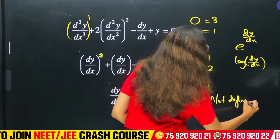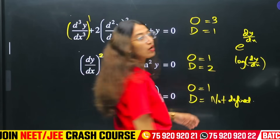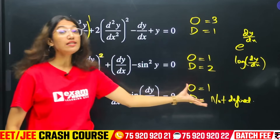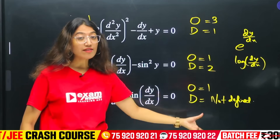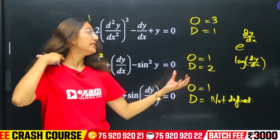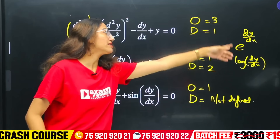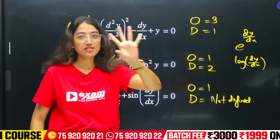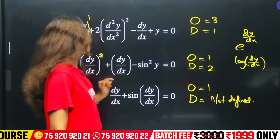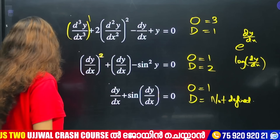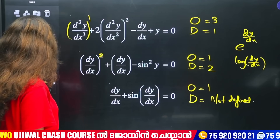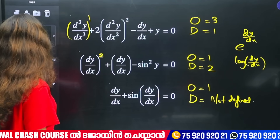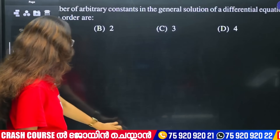This is why the order is always defined here. If you have an order, the degree may or may not exist. If you have an exam question, you will need to answer whether the degree is defined. The degree is important — if the degree is not defined, state 'not defined.'